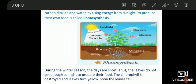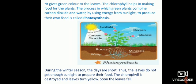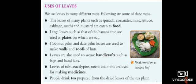During winter season, the days are short, so leaves don't get enough sunlight to prepare their food. The chlorophyll is destroyed and the leaves turn yellow and soon fall. You can observe that in winter the leaves won't get enough sunlight, so they turn yellow and fall from the tree. That is why you see the fall of leaves in winter.